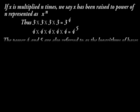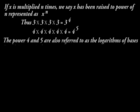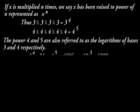The power 4 and 5 are also referred to as logarithms of bases 3 and 4 respectively. 3 raised to power 4 is equal to 81. 4 raised to power 5 is 4096. 10 raised to power 3 is 1000. In short,